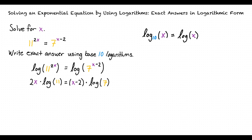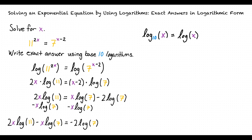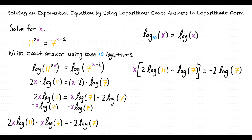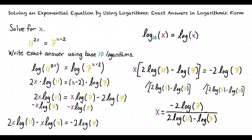Now that we have our equation in this form, we must multiply out x minus 2 and the base 10 logarithm of 7. Doing so, our equation will now look like this. Now, we must move all the terms with x in it to one side of the equation. We can factor out x from 2x times the base 10 logarithm of 11 minus x times the base 10 logarithm of 7 to get x times 2 base 10 logarithm of 11 minus the base 10 logarithm of 7. We isolate x by dividing both sides by that expression, and find that x is equal to negative 2 base 10 logarithm of 7 divided by 2 base 10 logarithm of 11 minus the base 10 logarithm of 7.